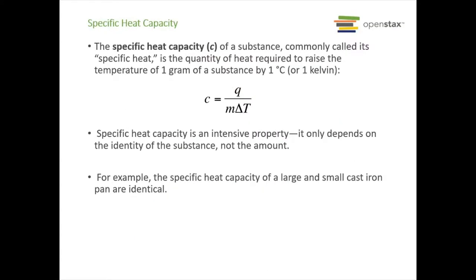Now we have specific heat capacity also known as specific heat, abbreviated with a little c. This is the quantity of heat required to raise the temperature of one gram of a substance by one degree Celsius or one kelvin. Now this is an intensive property. It only depends on the identity of the substance not the amount. So it doesn't matter how much of something you have, it is going to have the same specific heat capacity. For instance our two cast iron pans have the same specific heat.